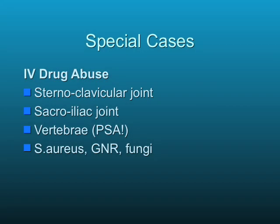Special cases to remember: when you see osteomyelitis in a hot, tender sternoclavicular joint or sacroiliac joint, those are tip-offs to IV drug abuse or hematogenous arthritis. Vertebral osteomyelitis is also hematogenous, and in drug users always remember the possibility of Pseudomonas. Most of the time it's still going to be Staph aureus, gram negatives, and fungi can occur in intravenous drug users as well.